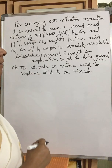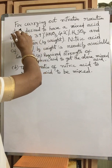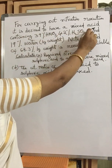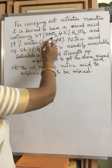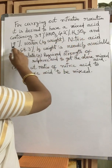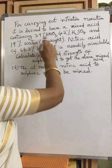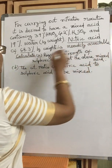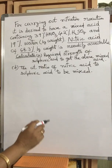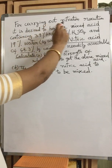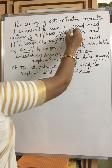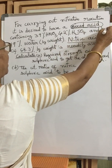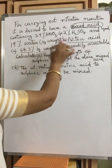We will solve another problem in mixing. For carrying out a nitration reaction, it is desired to have a mixed acid containing 39% HNO₃, 42% H₂SO₄, and 19% water by weight. All percentages are by weight. Nitric acid of 68.3% by weight is readily available. The desired mixed acid composition is the product acid here — this is the product acid.